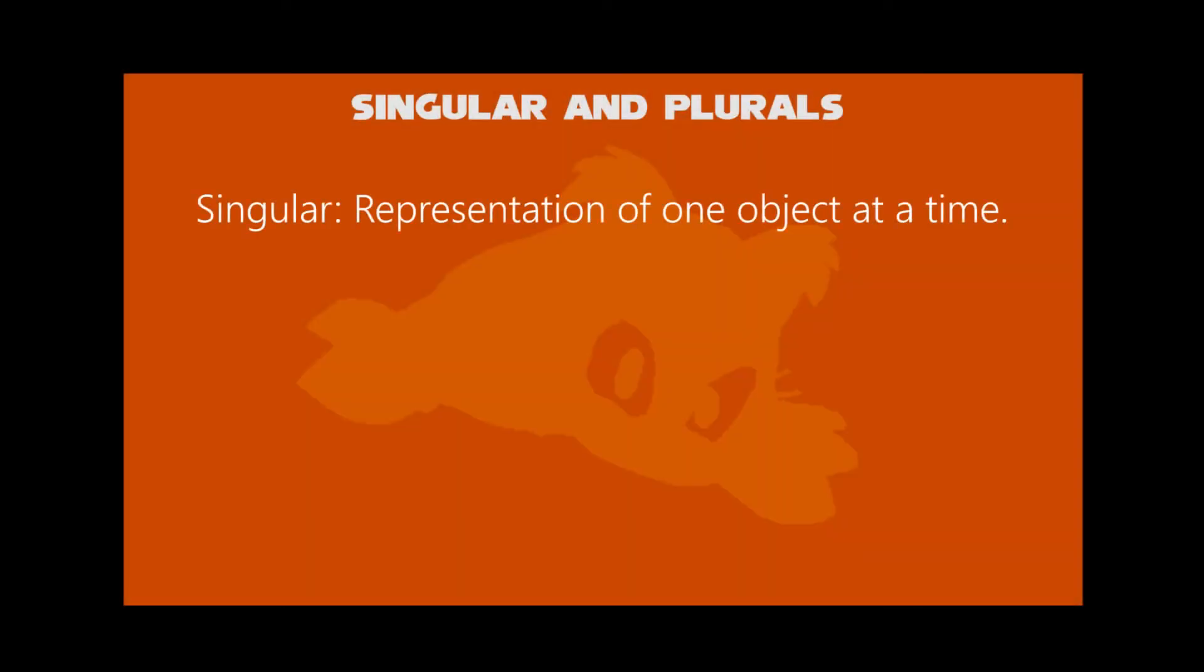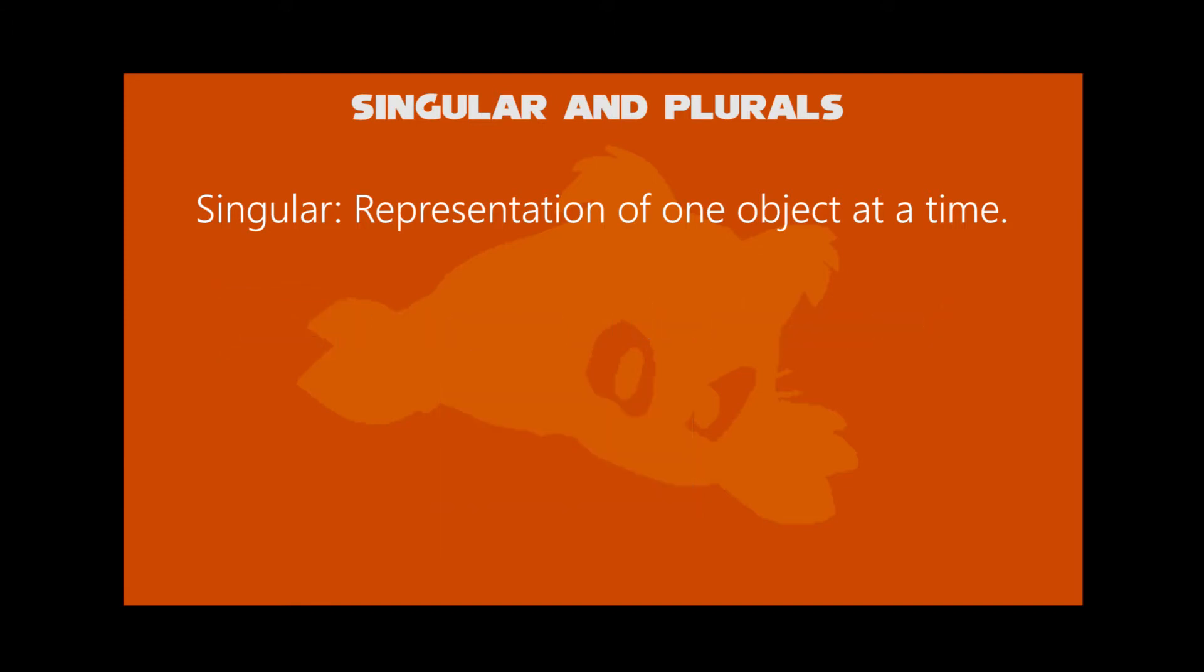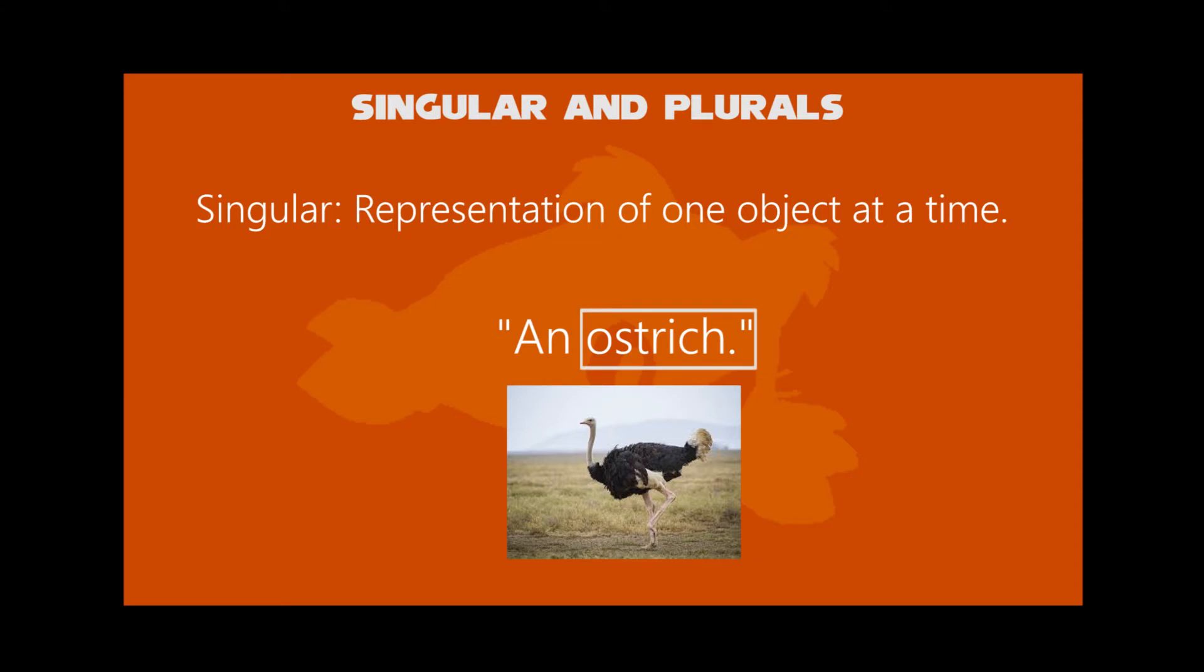Here, singular can be represented as one object. For example, dog is sleeping in the playhouse. We will mark dog as a singular. Another example, an ostrich. The word ostrich is selected as singular.